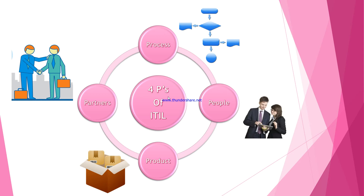Let's understand what exactly the Process is. Process is nothing but a structured set of activities which takes multiple inputs and gives a specific output. Whenever we talk about any organization, business, or company, it has multiple processes to be executed. The process becomes the first P of ITIL.